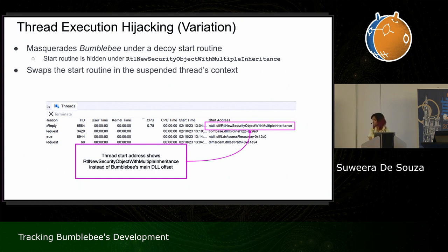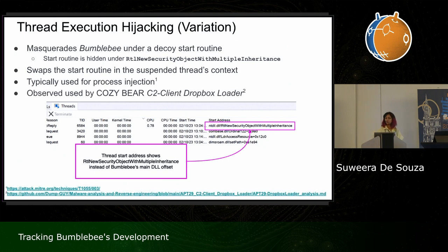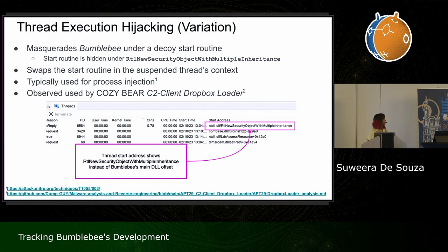The technique works by first creating the API in a suspended thread mode. When the thread is suspended, it modifies the thread's context structure — within that structure is a field specifying the start offset — and simply swaps the API's address with that of Bumblebee. Generally this technique is used for process injection, and there's a MITRE ATT&CK entry for it. The closest related technique I found was a blog about Cozy Bear's Dropbox loader using this exact same technique with the same API name as a decoy — likely not a coincidence, and definitely borrowed code.